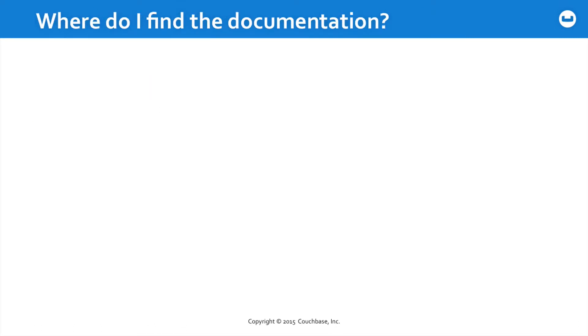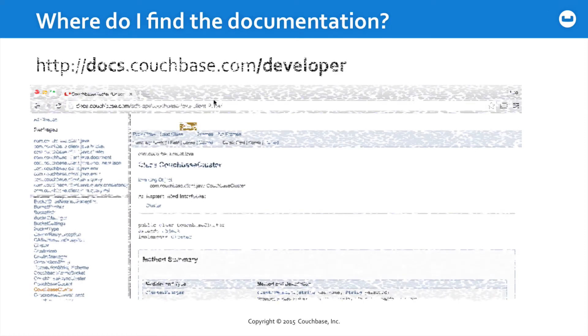Obviously, there's got to be a lot more than what we're showing in that short slide. The documentation can be found online at docs.couchbase.com/developer. You can find your way to the API documentation for the specific SDK version that you happen to be working with, as well as a great deal of other helpful documentation.